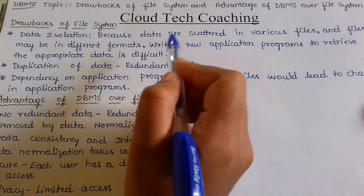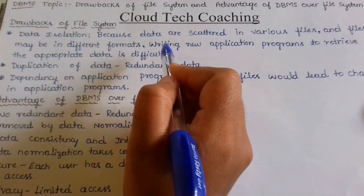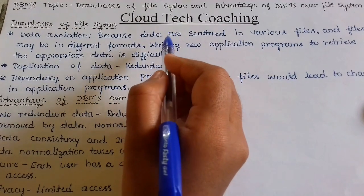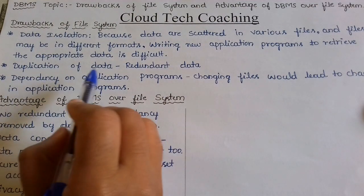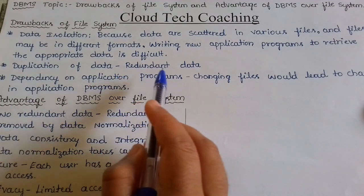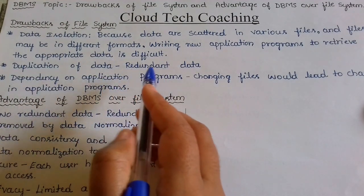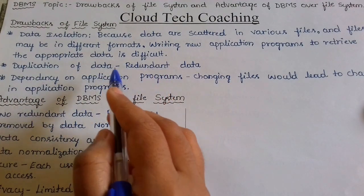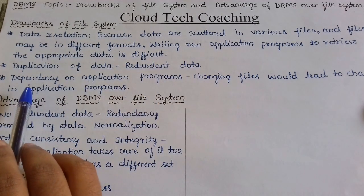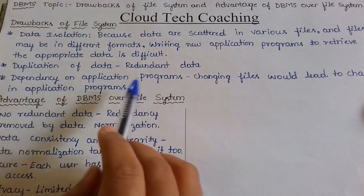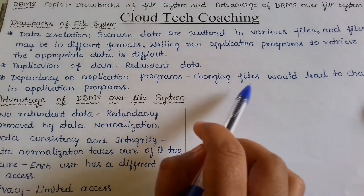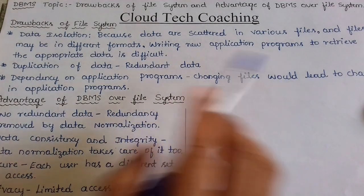Since the data is scattered in various files, writing new applications using that data will be difficult. Another drawback is duplication of data, meaning redundant data — repetition of data — will be more. And there is dependency on application programs, meaning changing files would lead to changes in application programs.